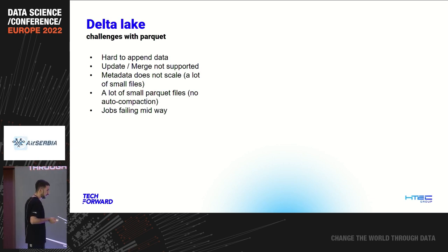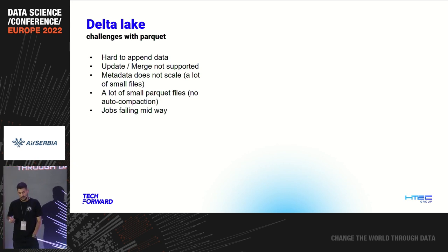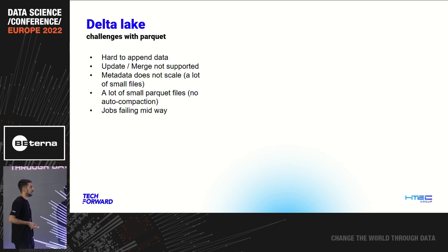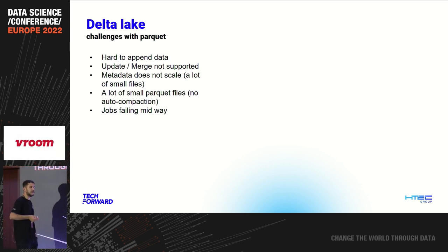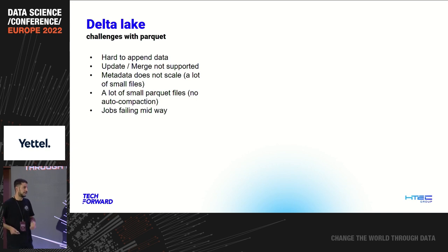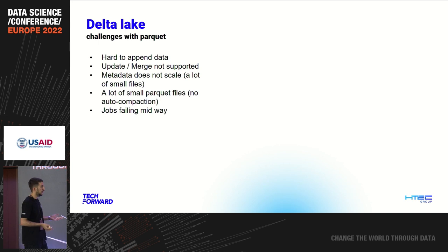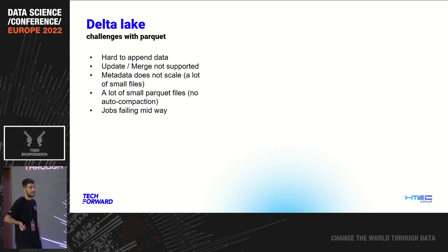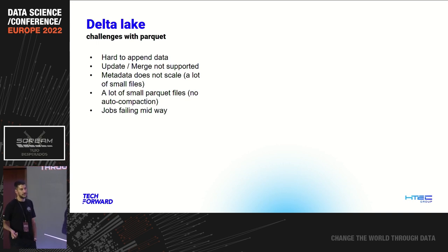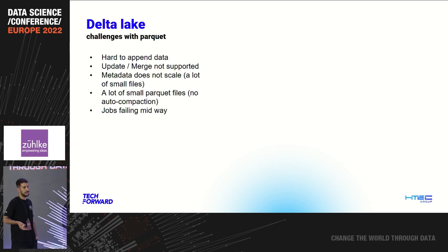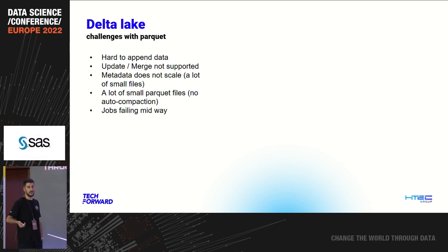If it is better than Parquet, let's see why Parquet is not perfect. We all like Parquet, but Parquet is immutable — you cannot change it, you cannot update it. If you want to update one row, you need to take the whole Parquet file, update one row, and overwrite the whole file again. Metadata doesn't scale at all because for each Parquet file you have a small metadata file, which can be a bottleneck if you don't create your own procedures to manage it. A lot of small Parquet files without auto-compaction means you need to write your own procedures. And jobs can fail mid-way, meaning a subset of data can be processed and a subset can fail without you knowing, if you don't invest in monitoring.